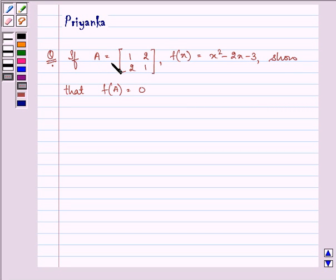The question says if A is equal to the matrix having elements 1, 2, 2, 1 in the columns, and f(x) is equal to x squared minus 2x minus 3, show that f(A) is equal to 0.